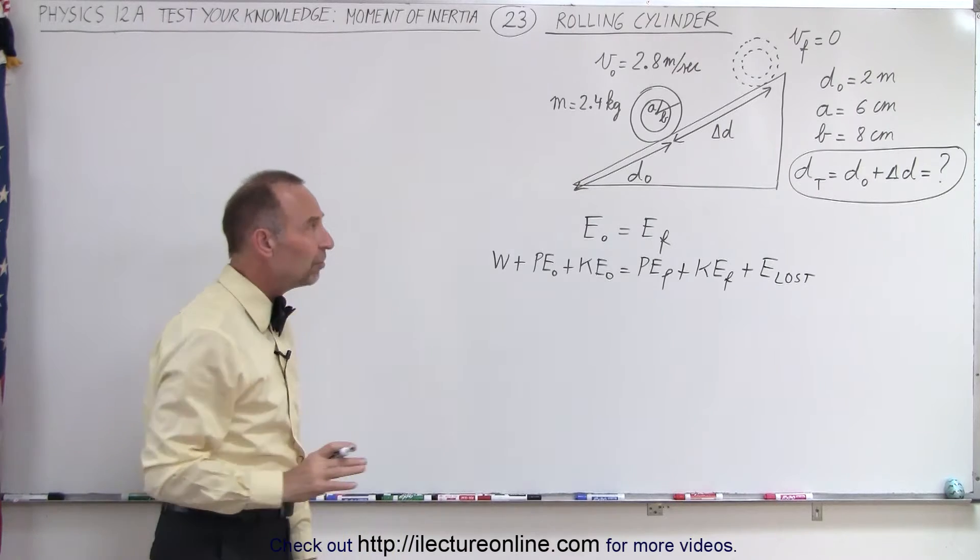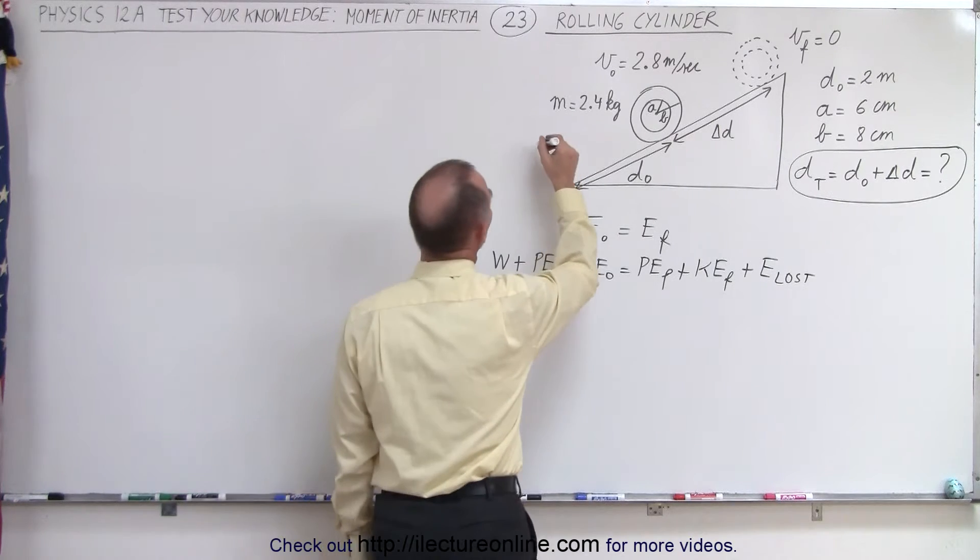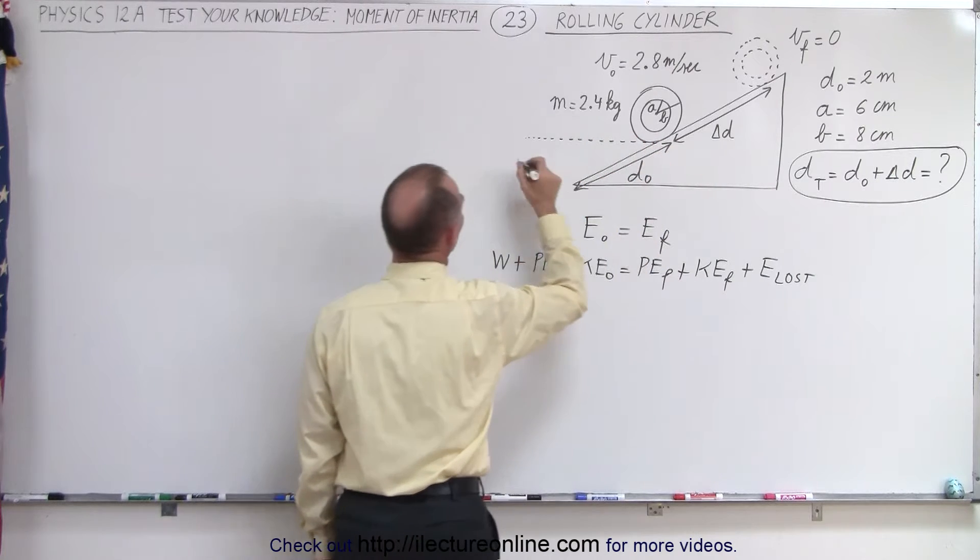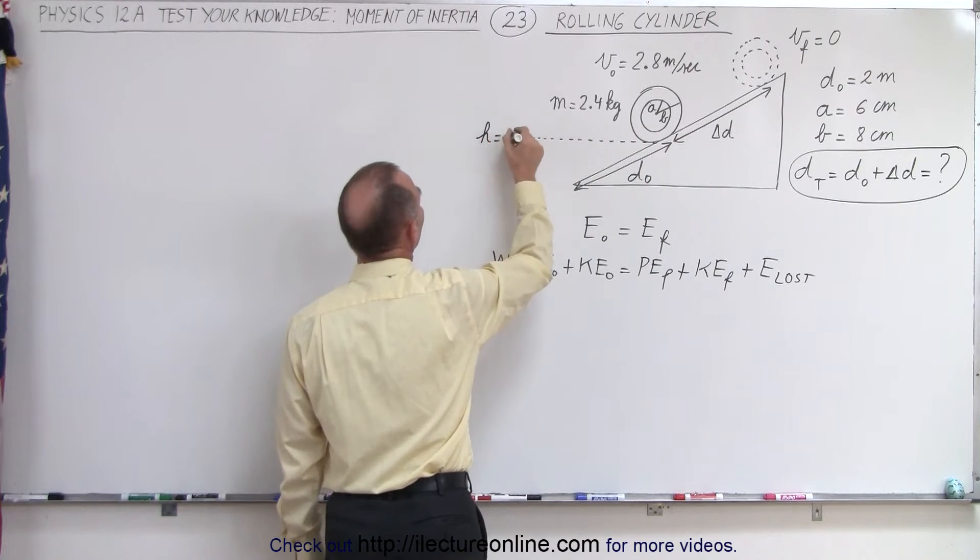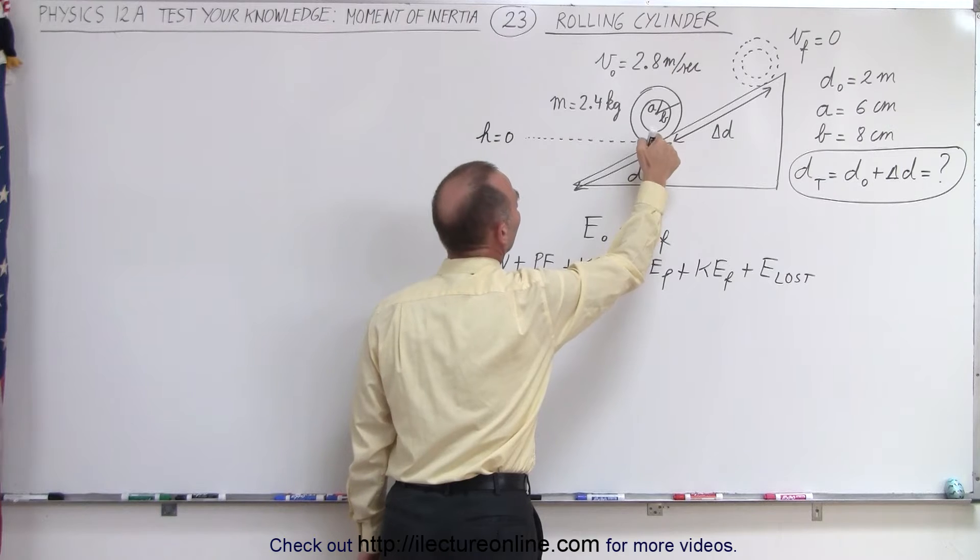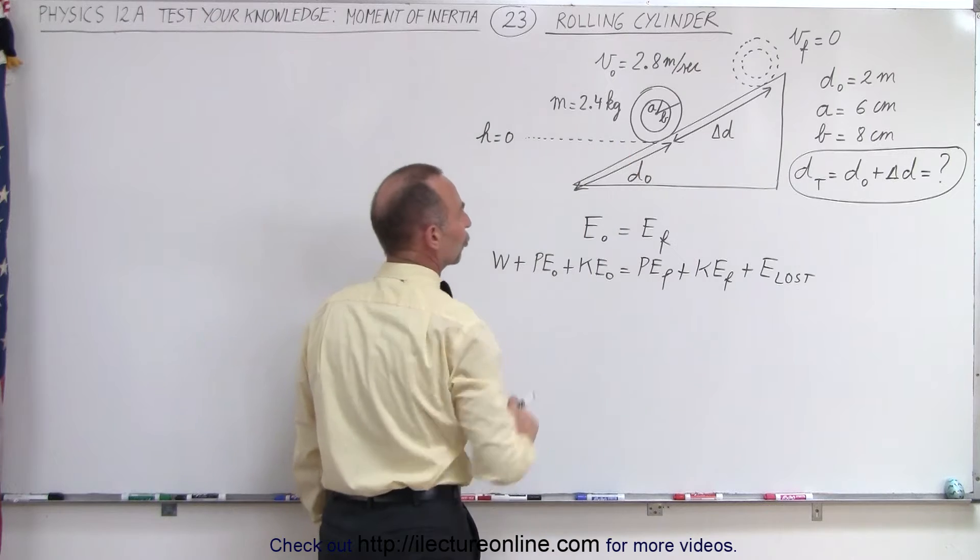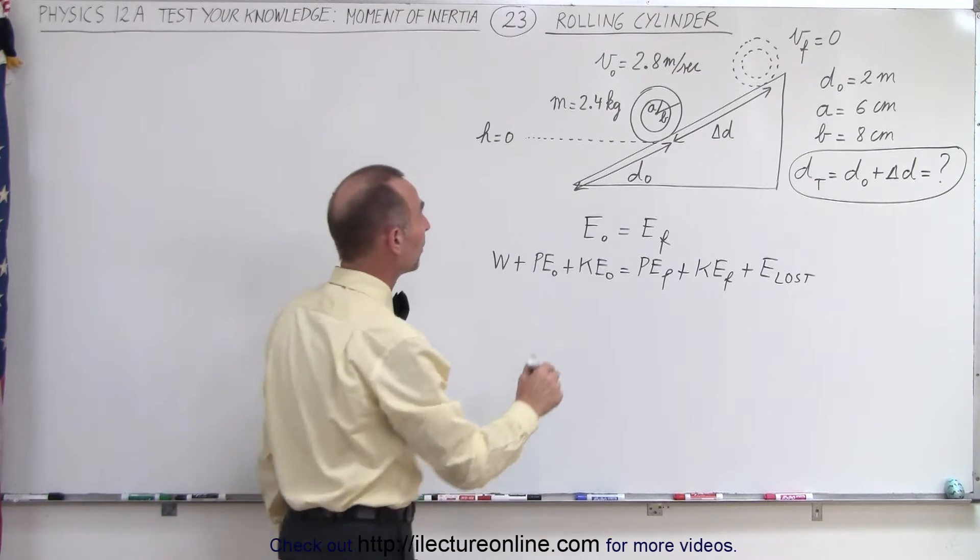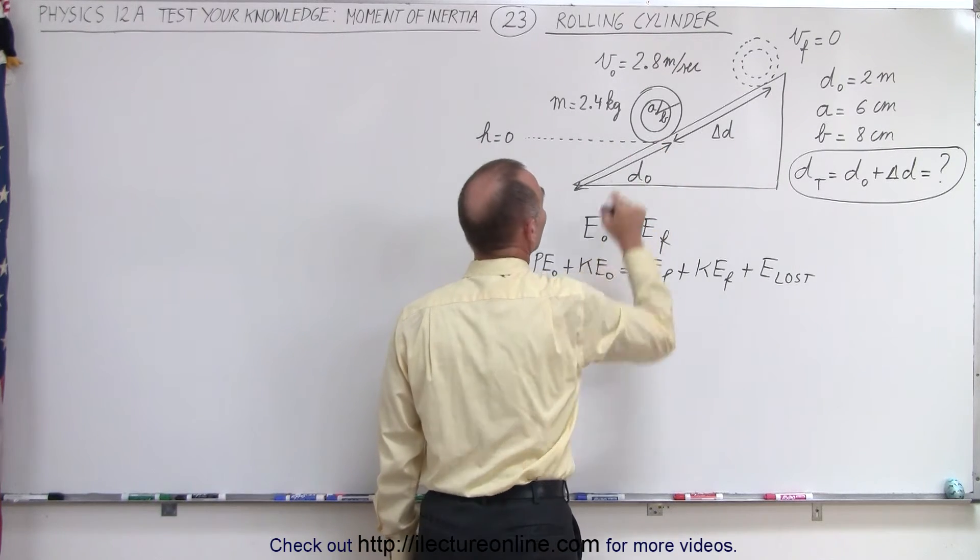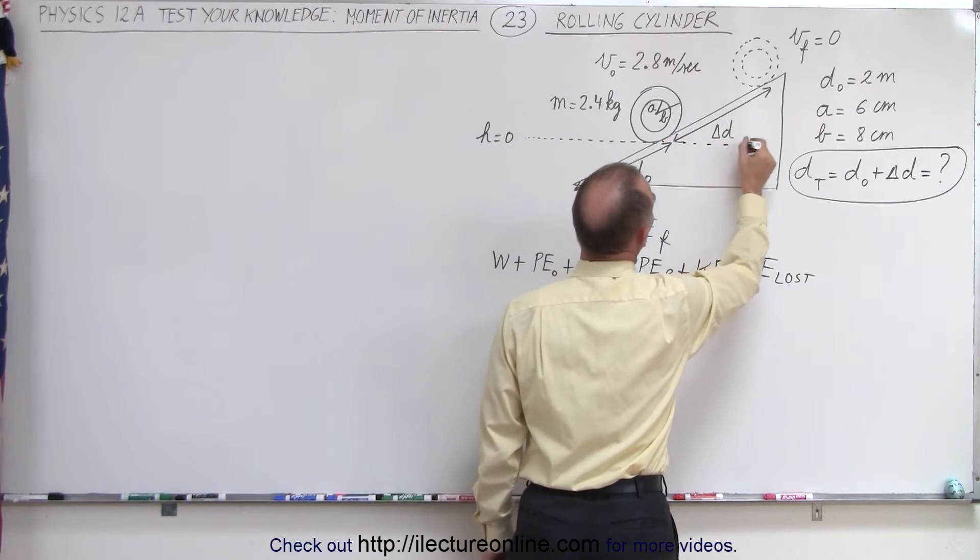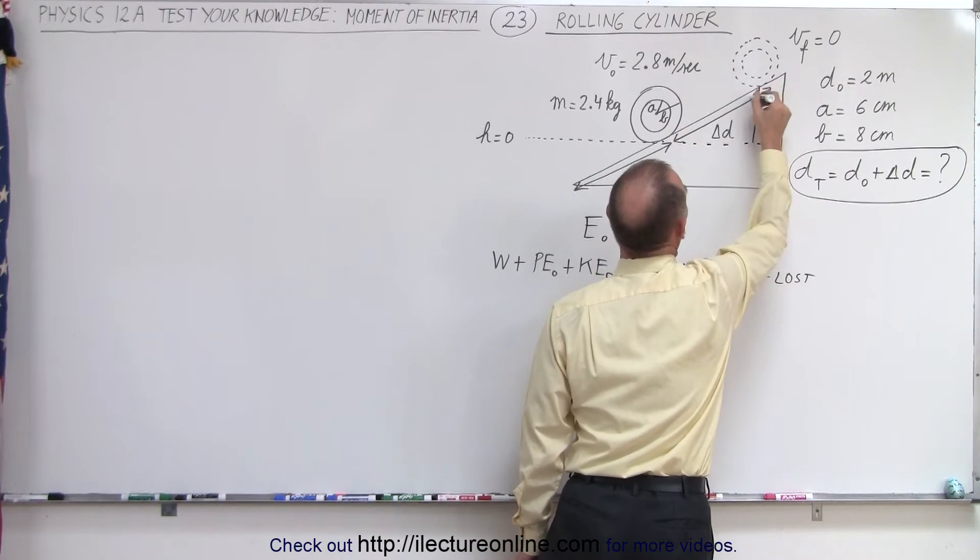Now to make the problem easier, what we can do is we can set the relative position of the height equals zero at the bottom of the cylinder at this very moment in time. So we don't want to set it right here because then we have to have extra terms. So we can make it simpler by simply saying this is the height equals zero position.